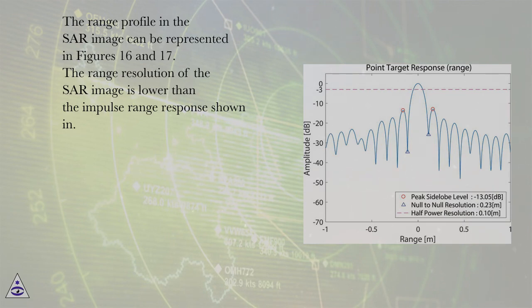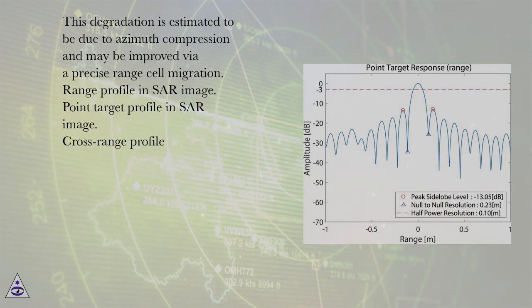The range resolution of the SAR image is lower than the impulse range response shown. This degradation is estimated to be due to azimuth compression and may be improved via precise range cell migration.